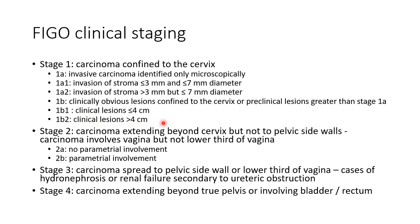Remember, in all these stage 1 cases, the carcinoma is confined to the cervix. In stage 2, the carcinoma extends beyond the cervix but not to the pelvic side walls. The carcinoma can involve the vagina but not the lower third. Stage 2 is further subdivided into 2a and 2b. In 2a there is no parametrial involvement, whereas in stage 2b there is parametrial involvement.